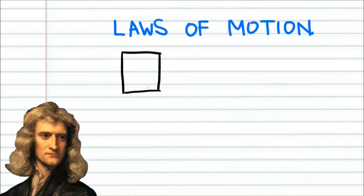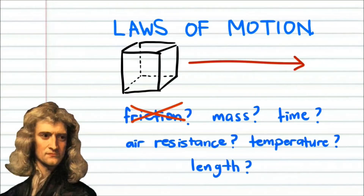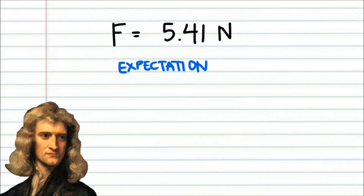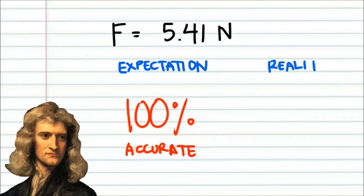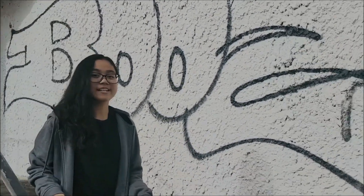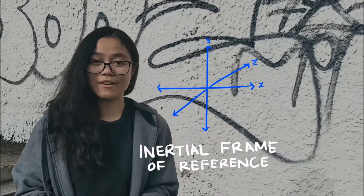When developing his laws, he simplified his treatment for massive bodies by ignoring factors like friction, air resistance, temperature, and the like, and focusing on mass, length, and time. As a result, Newton's laws cannot be used to accurately describe the behavior of large objects, only approximations. Newton's laws concern the motion of large bodies in an inertial frame of reference, which is basically a three-coordinate system at a constant velocity. Motion within such a frame could be described using three laws.